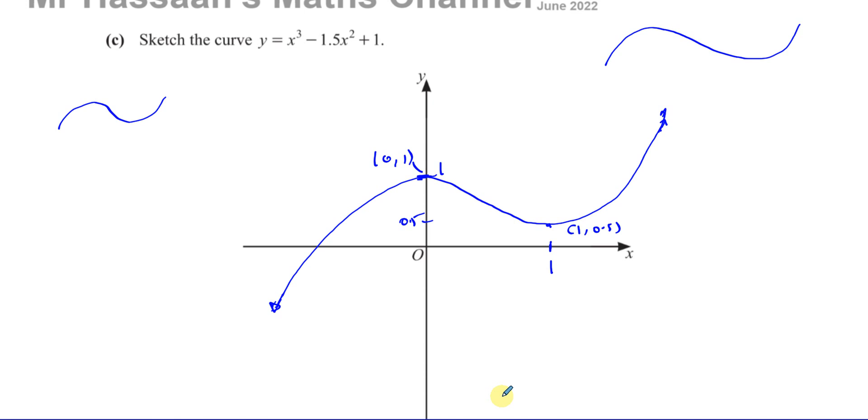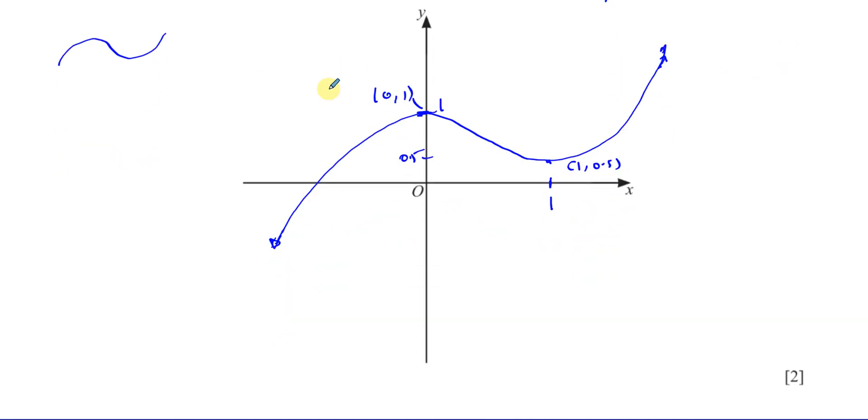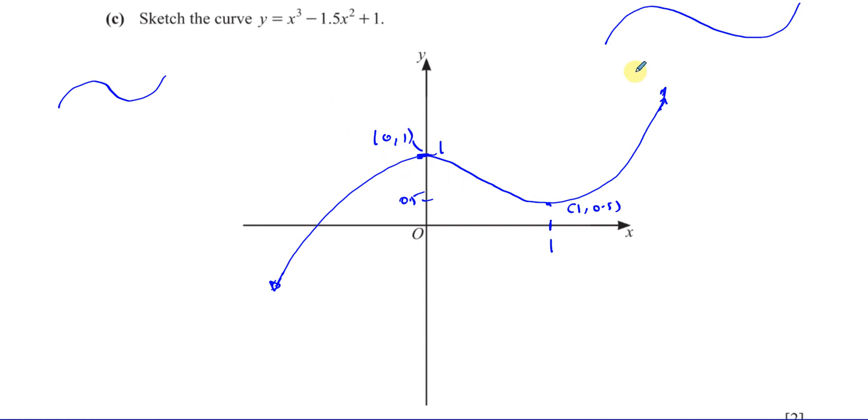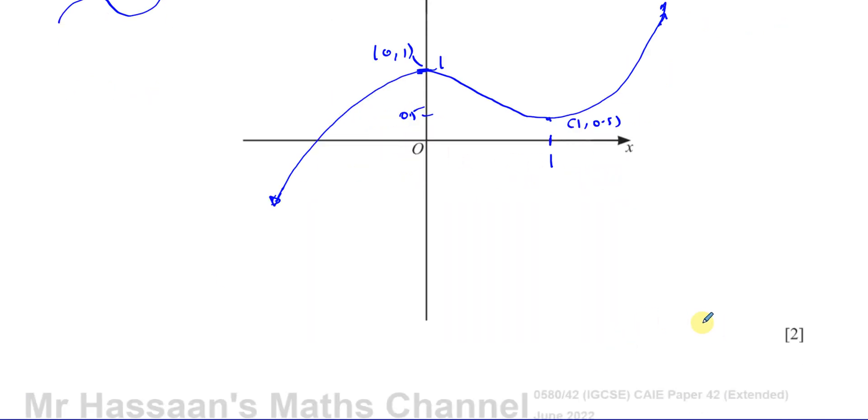Where it crosses the x-axis here, we cannot determine that with the knowledge that we have. It's not easy for us with the knowledge we have in IGCSE. So they won't expect it. If you look at the mark scheme, they don't expect you to find that. Just draw the right shape and have this point here.